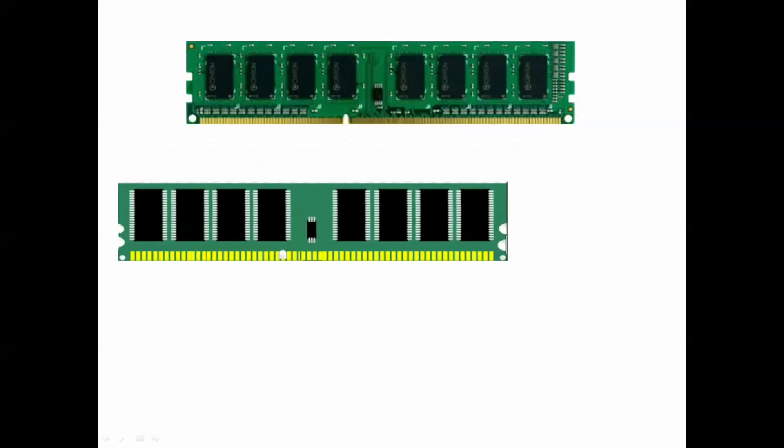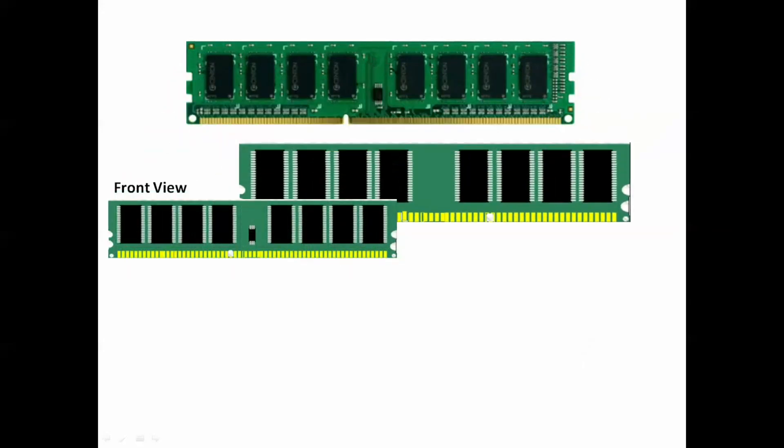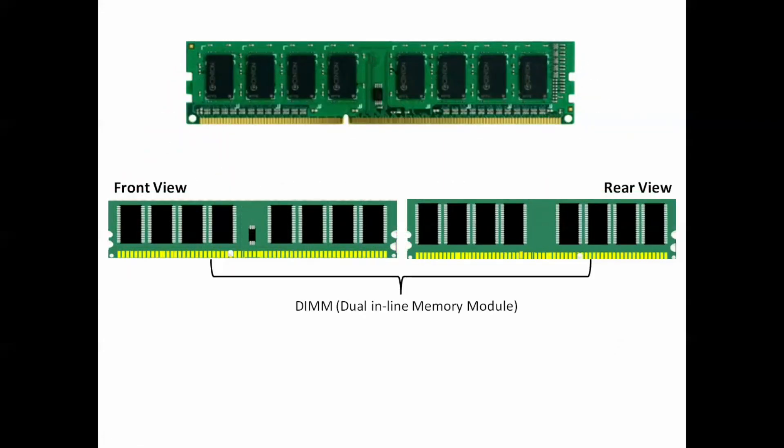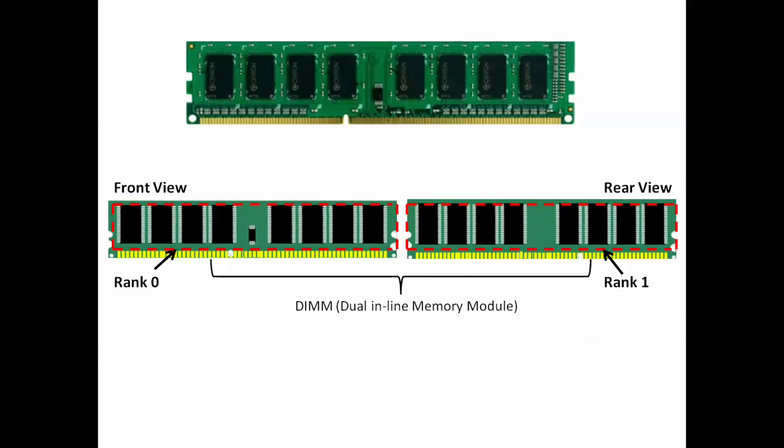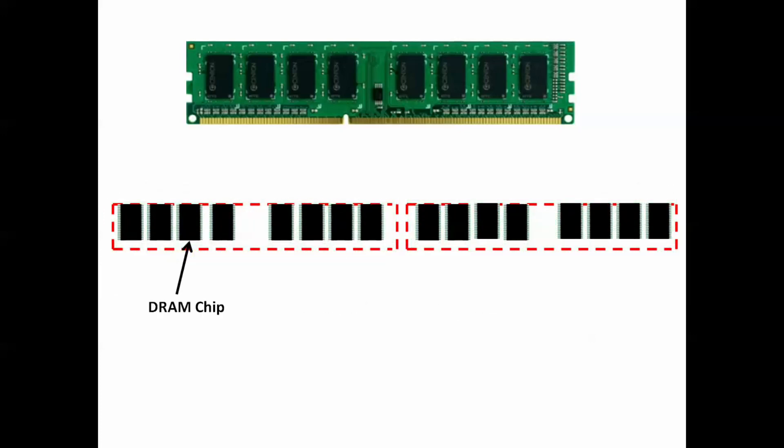Before digging deep into memory interleaving, let's have a quick look at the memory units. The main memory comprises of these kind of sticks. For a DIMM-based SDRAM, the front view and back view form the DIMM, i.e. dual in-line memory module. Collection of chips on each side of the stick is known as RANK, and these RANK consist of DRAM chips.